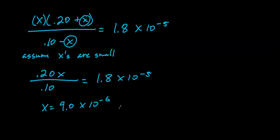Look at the assumptions and their implications. Don't forget to check your assumptions: plug x back into 0.20 + x — that tiny number added to 0.20 still gives 0.20 — and 0.10 − x still gives 0.10. So the assumption is valid.